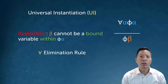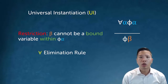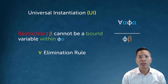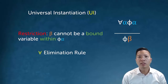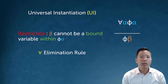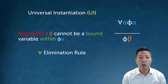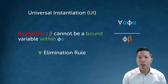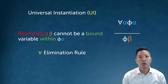Our first rule is universal instantiation (UI), and the instantiation rules are our elimination rules — so UI is the elimination of the universal. It says we can go from a universal statement to a substitution of that statement: if everything is a phi, then phi of beta holds for any beta. There's an important restriction: beta, the variable you instantiate to, cannot be bound within the original phi alpha. We won't worry about this for now, but when the restriction comes up you need to know to avoid it.